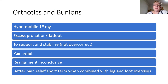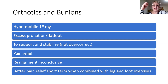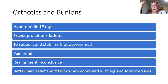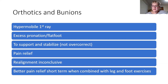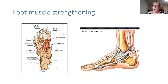Orthotics for bunions can help stabilize the hypermobile first ray and those joints further back in the foot that may be excessively pronating or causing the foot to roll in too much, contributing to flat foot. The evidence is that orthotics help with pain relief in bunions, though we're still inconclusive as to whether they reduce malalignment or slow its progression over time. There is a study showing that combining foot exercises with orthotics produces better pain relief, particularly in the first three to four months of treatment.